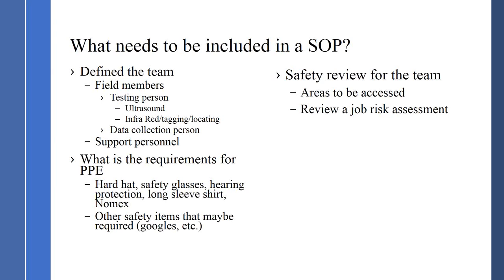Safety review for team members covers areas to be accessed — do we need to check into the control room, sign in, or put our names on the board so they know we're there? We also conduct a job risk assessment. Some plants have their own forms for that; if they don't, we use our own form for all team members to identify risks that might be out there. The SOP provides guidelines for what information goes on the risk assessment.